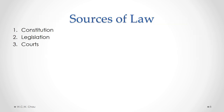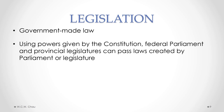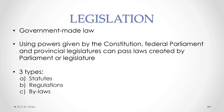The three sources of law that we have in Canada are the Constitution, legislation, and the courts. The Constitution we will examine later in this module. In this part, we'll look at legislation — also called government-made law — and the courts. Legislation is law created by any type of government in Canada: federal, provincial, or municipal. The three types of legislation are statutes, regulations, and bylaws.